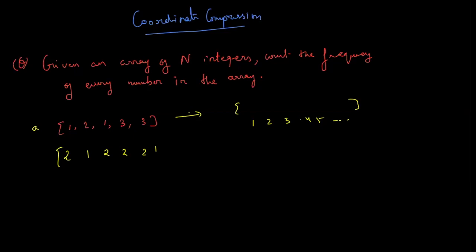Till whatever is the maximum constraint, like let's say if the array integers are from the range 1 to 10 to the power 6, so you will have a frequency array of 1 to 10 to the power 6. So initially everything should be 0.